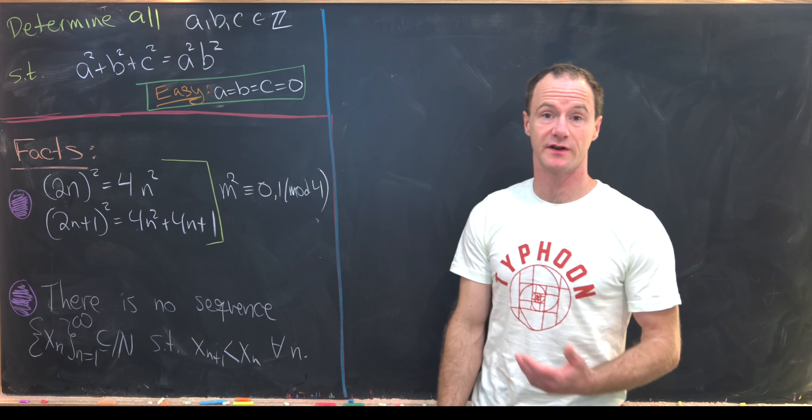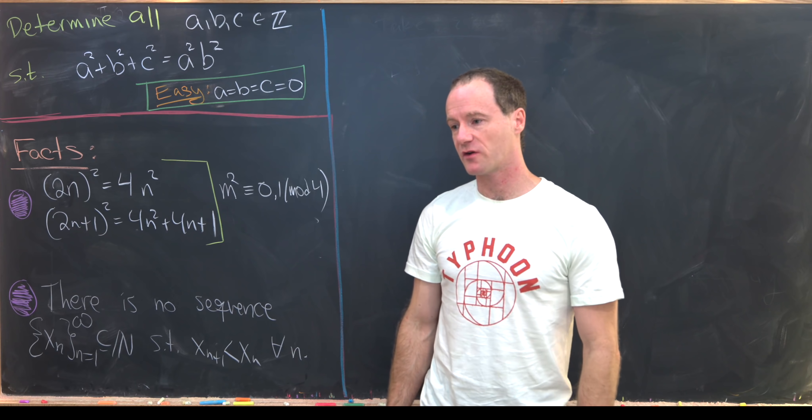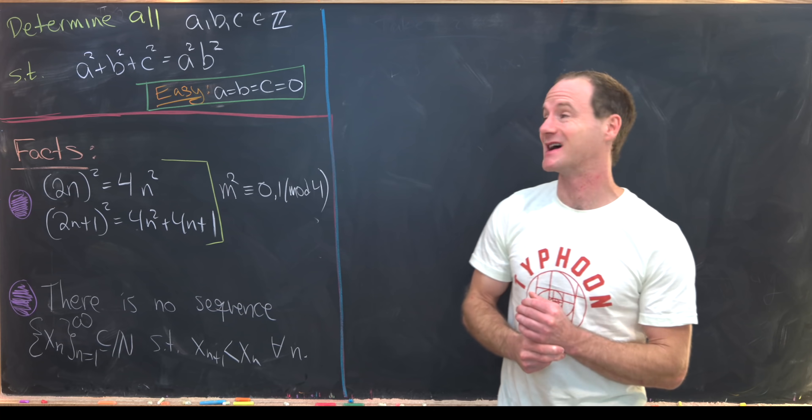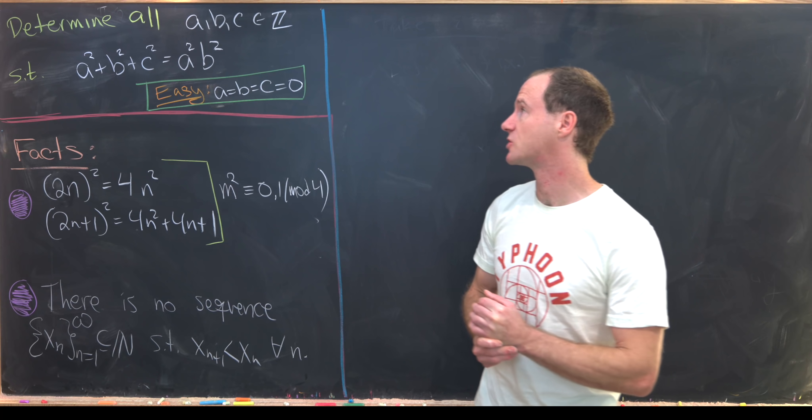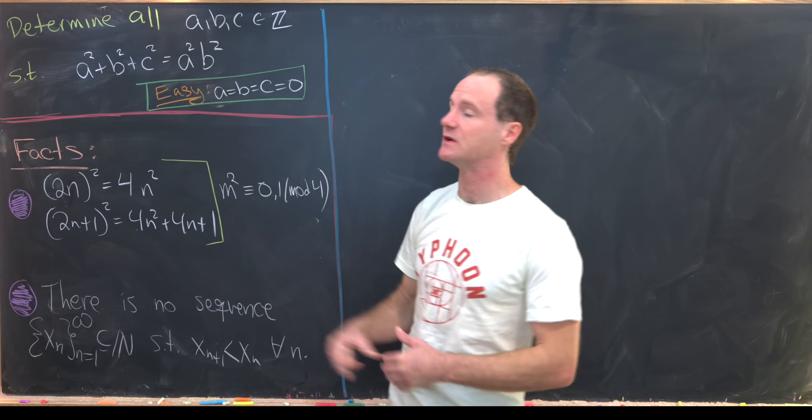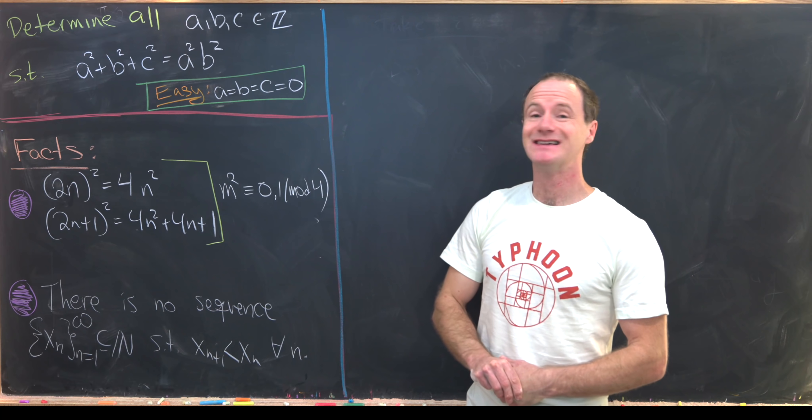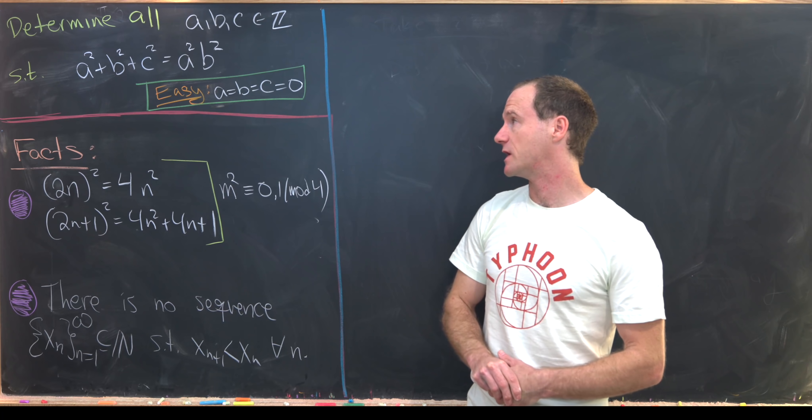Here I've got a nice little number theory type problem, and it's really solving what is called a quadratic Diophantine equation. Okay, so our goal is to determine all a, b, and c which are integers satisfying the following equation.